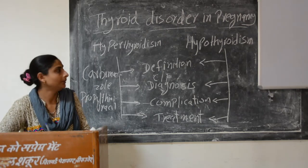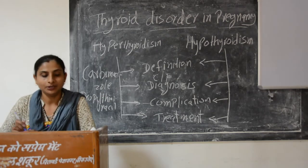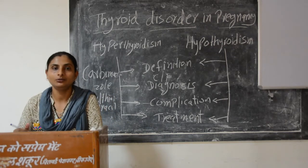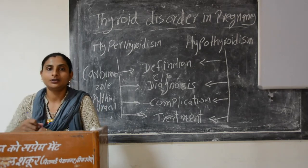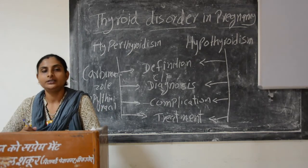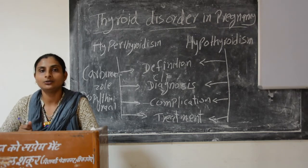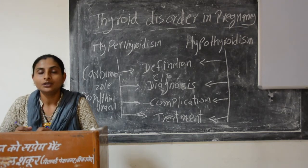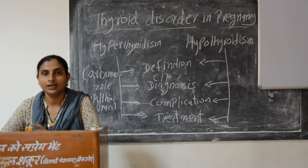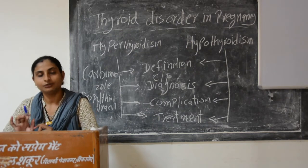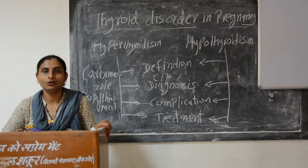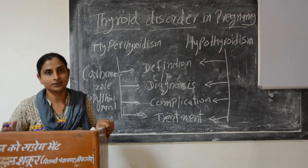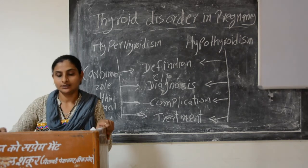Now let's look at hypothyroidism. Hypothyroidism means that thyroid hormone levels decrease in the blood. T3 and T4 levels decrease in the blood, but TSH levels increase in the blood.